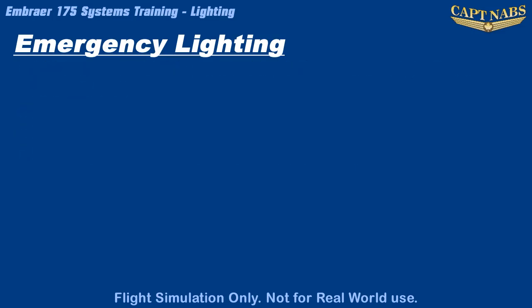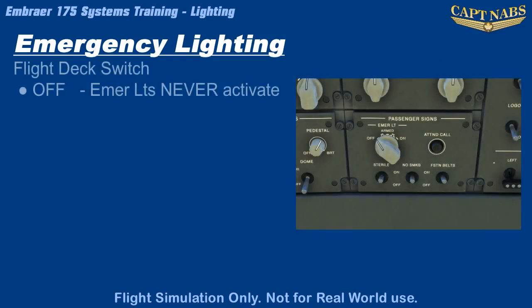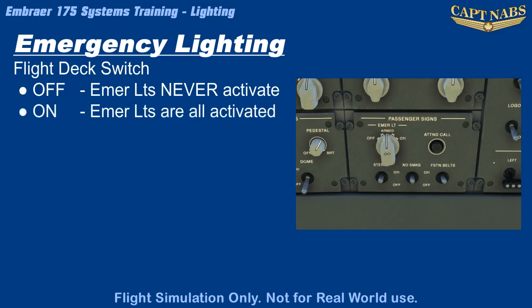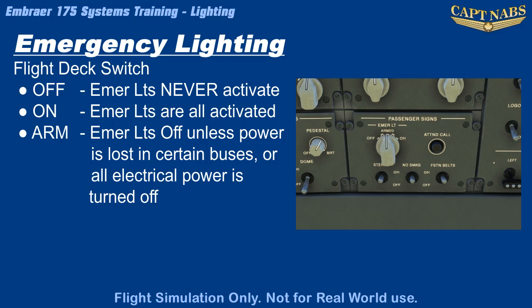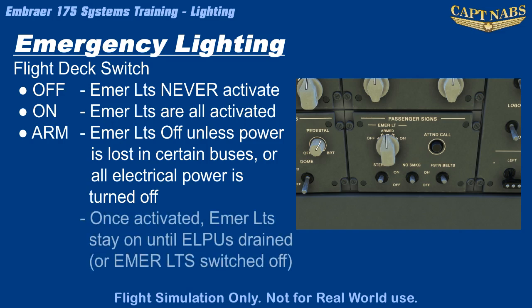The emergency lights are controlled by a switch in the flight deck and a switch on each flight attendant panel. If the flight deck switch is off, the lights are prevented from illuminating under any circumstances. If the switch is on, all the emergency lights will be turned on. In ARM mode, where the switch will spend most of its time, the emergency lights remain off unless the DC buses lose electrical power or all electrical power is turned off in the aircraft. In either of these cases, the emergency lights will automatically turn on and remain on until the ELPUs run out of battery power.